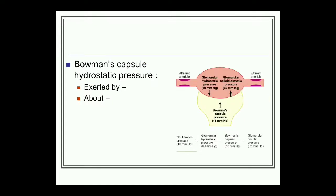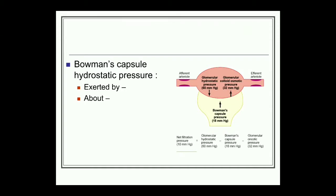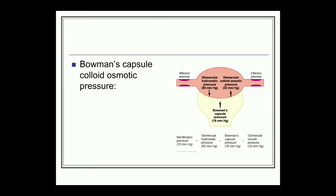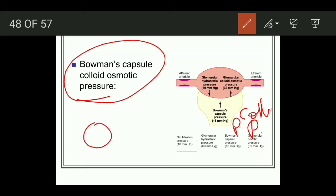Third is Bowman's capsule hydrostatic pressure. The fluid in the Bowman's capsule opposes filtration at 18 mmHg. When this pressure increases — for example from 18 to 28 mmHg — glomerular filtration is reduced. Fourth is Bowman's capsule colloid osmotic pressure. Although colloids in the Bowman's capsule would favor filtration, this pressure is zero because plasma proteins are not filtered, so it has no important role in the normal healthy individual.